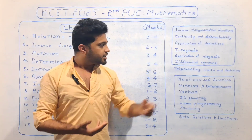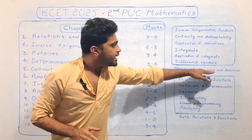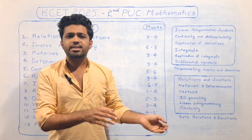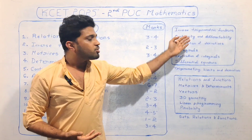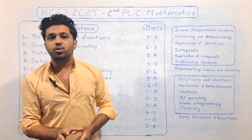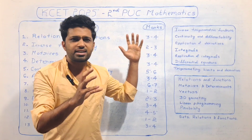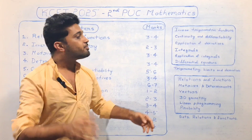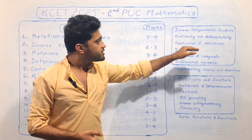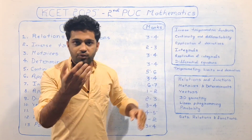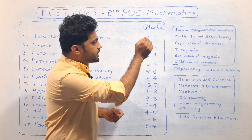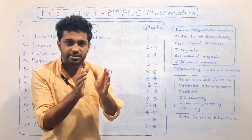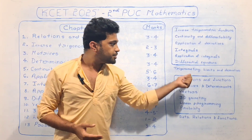You will study the basics from first PUC — limits and derivatives of trigonometry — to build your foundation. You will study KCET problems and tricks. The key chapters are: Inverse Trigonometric Functions, Continuity and Differentiability, Application of Derivatives, Integrals, Application of Integrals, and Differential Equations. All these chapters will help you solve problems effectively.